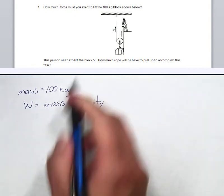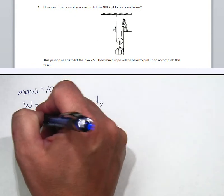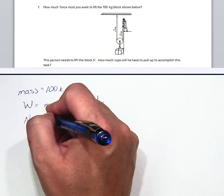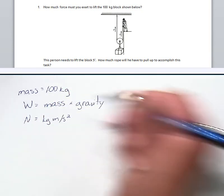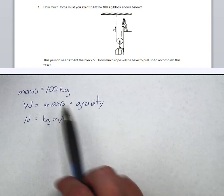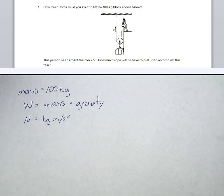You have to have mass in kilograms because a newton is a kilogram meter per second squared. So our mass has to be in kilograms. Our gravity has to be in meters per second squared.